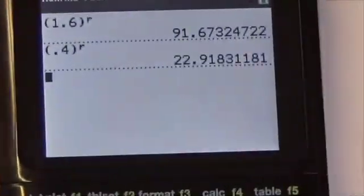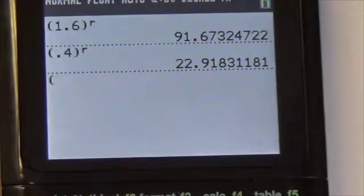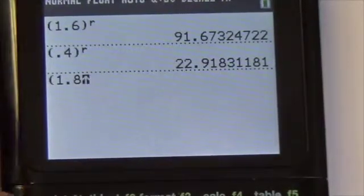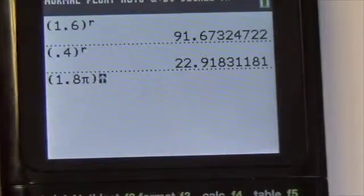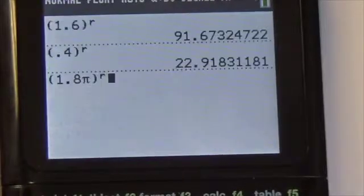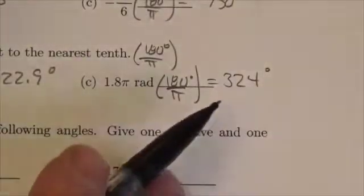And then finally, in parentheses here, 1.8π. Then I go to my angle menu, and I tell the calculator that this is a radian. Press enter. And it converts it to 324 degrees, which is what we got before.